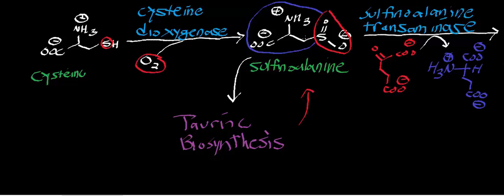Now, sulfenoalanine really stands at a crossroad in liver cell metabolism. The sulfenoalanine can go one of two directions. Either it can go and be degraded to pyruvate through the next enzyme, or it can go into something called taurine biosynthesis. And we won't go into a whole lot of detail here about taurine,